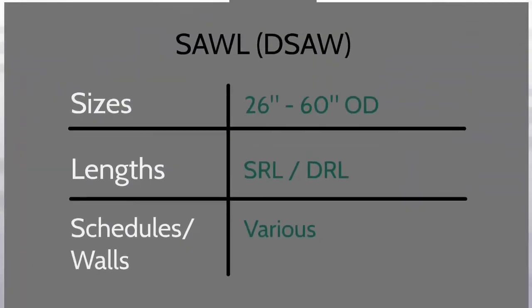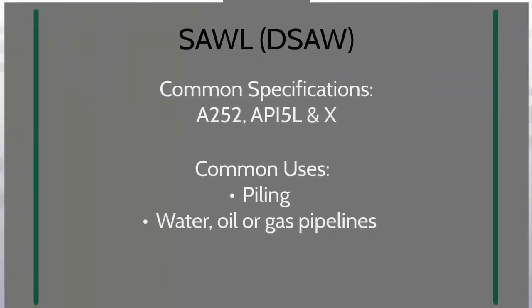The following defines SAWL or DSAW pipe. Common specifications for SAWL pipe include A252, API 5L, and X grades. Common uses for SAWL or DSAW pipe include piling, water, oil, or gas pipeline.